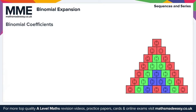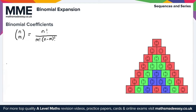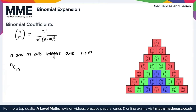Moving on now to binomial coefficients. We write the binomial coefficient as n with an m underneath using this notation, and we read this as 'n choose m'. The formula for this is n factorial divided by m factorial times (n minus m) factorial. Here m and n are integers and n must be greater than m. We can also write this notation as nCm, which again means n choose m. The binomial coefficients are the same as the numbers in Pascal's triangle, as we can see here.